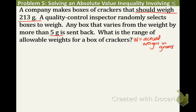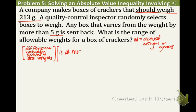That's what we're looking for. And now let's draw a little model to help us out. What we're going to do is find the difference between the actual and ideal weights. And that is going to be at most 5 grams. If it is more than 5 grams off of the ideal weight, it will be sent back. And that's not good. So here is our model.